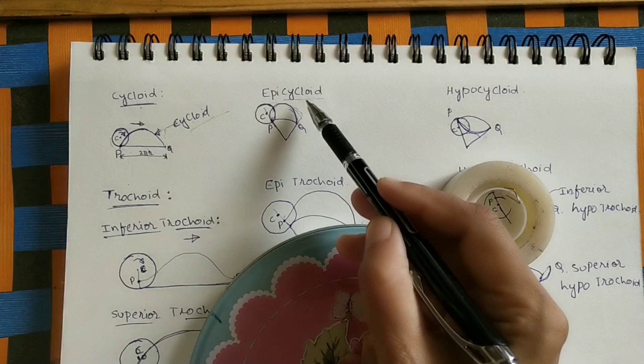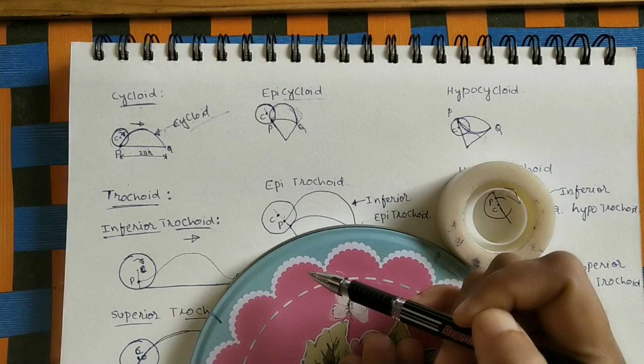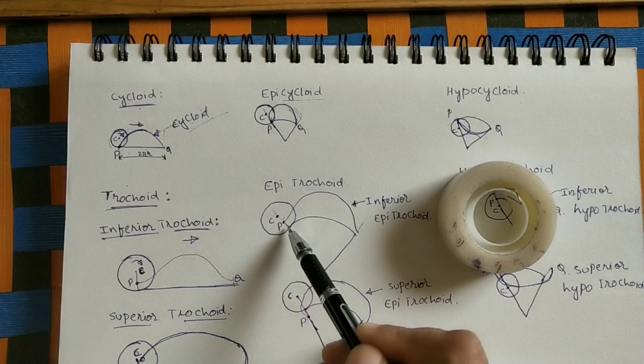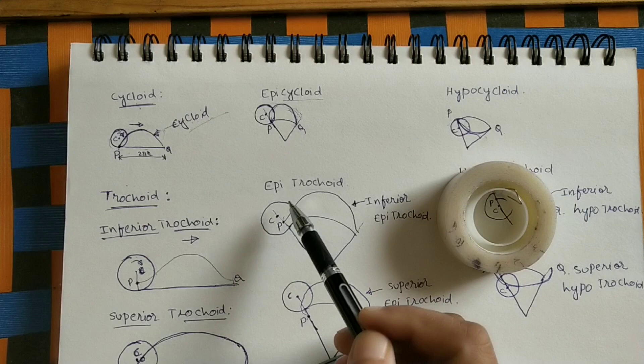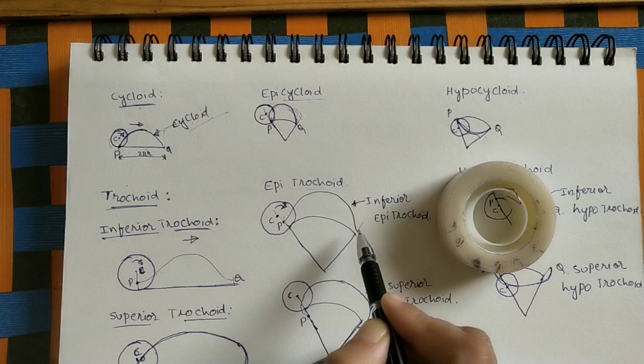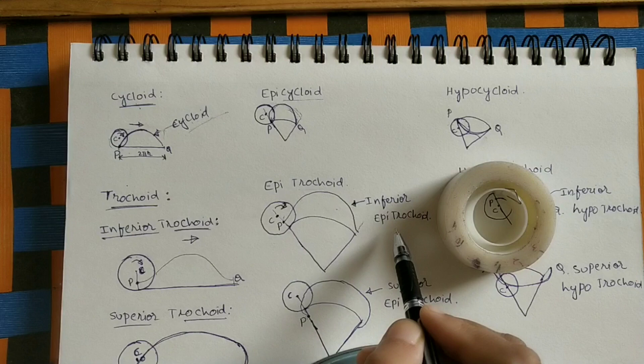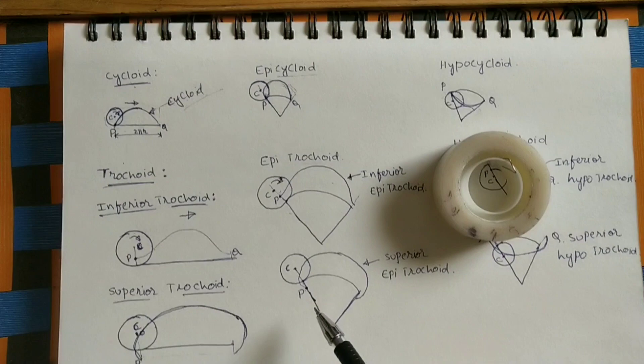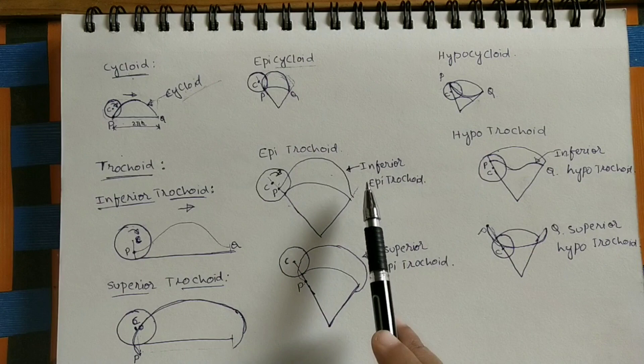In trochoid also we are taking one point which is inside the circle, not on the circumference. If P point is inside the circle and the circle is rolling on the curved path, then the P path will come like this — this curve is called inferior epitrochoid. If P point is outside the circle, it is called superior epitrochoid. So let us take the inferior epitrochoid.